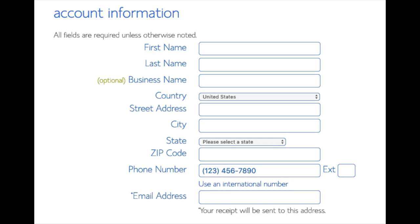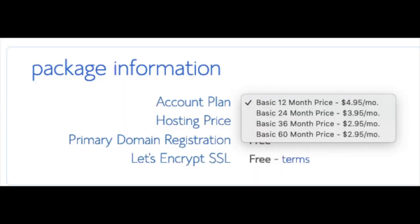You'll need to enter your first name, last name, business name (optional), country and address information, phone number, and the best email for you, as you'll receive an email receipt of payment and a copy of your login credentials. Below that you will see package information. Under account plan, you can select a term for your hosting package: 12 months, 24 months, 36 months, or 60 months. As you can see, you will save money the longer you purchase your hosting for.